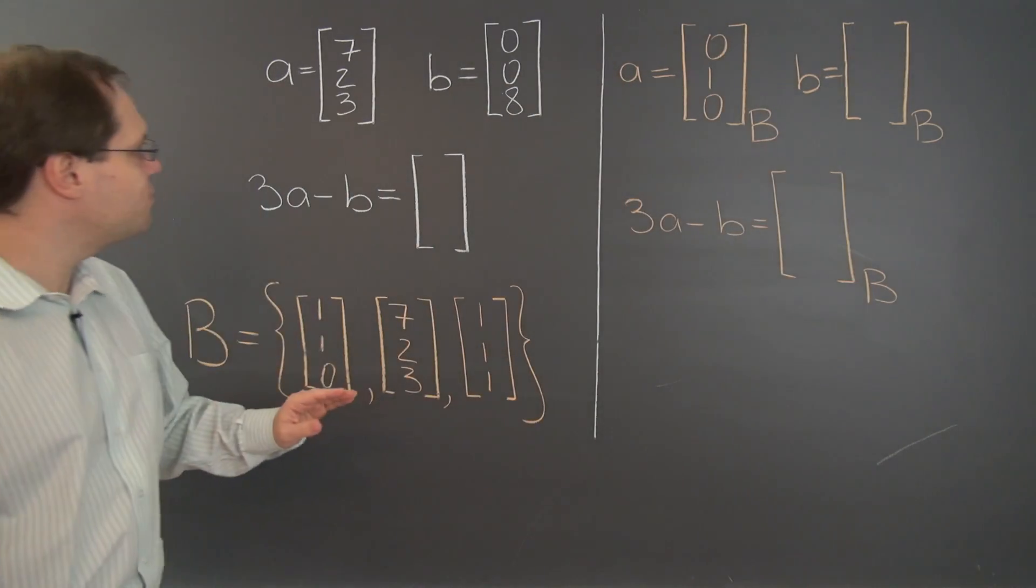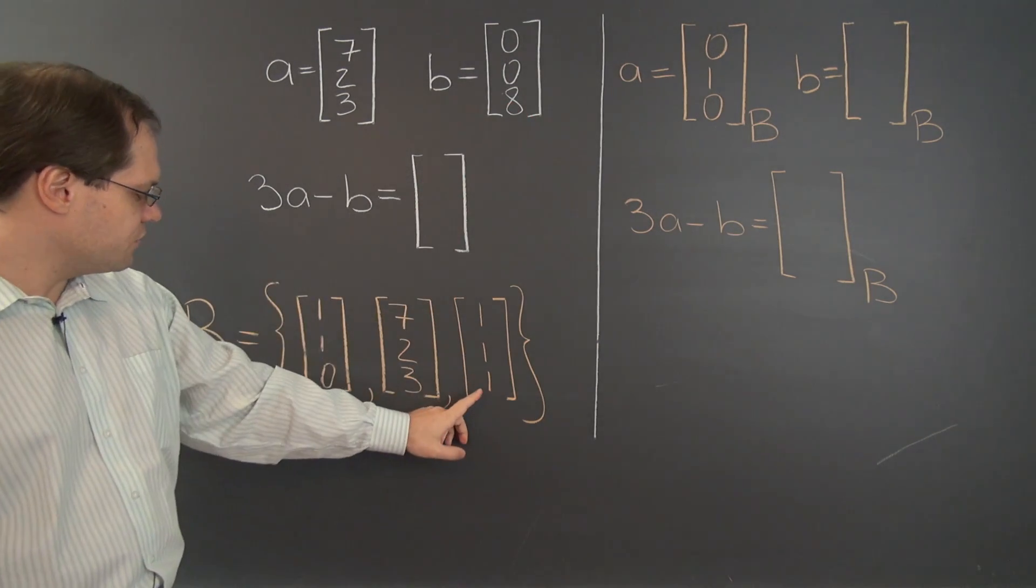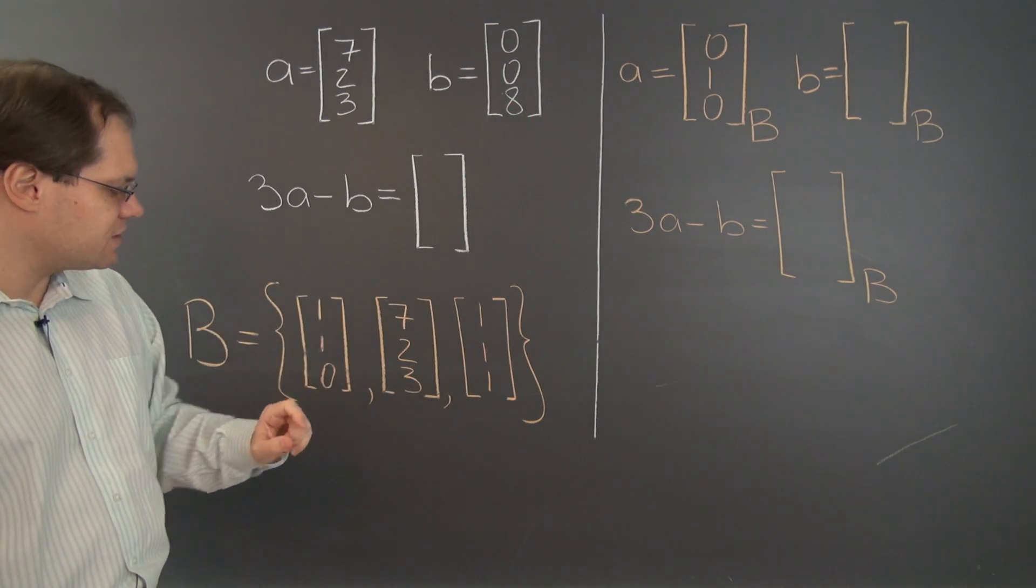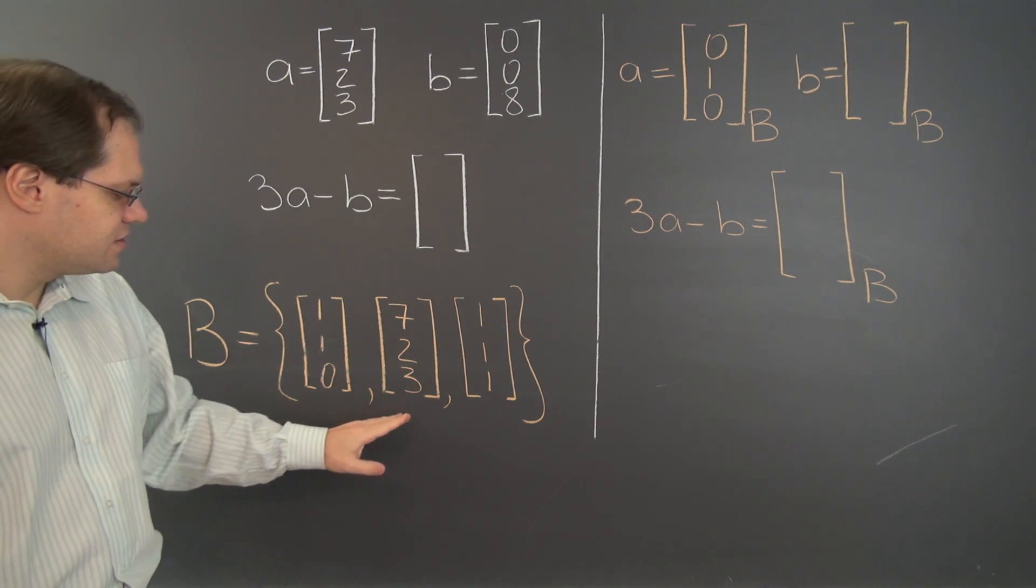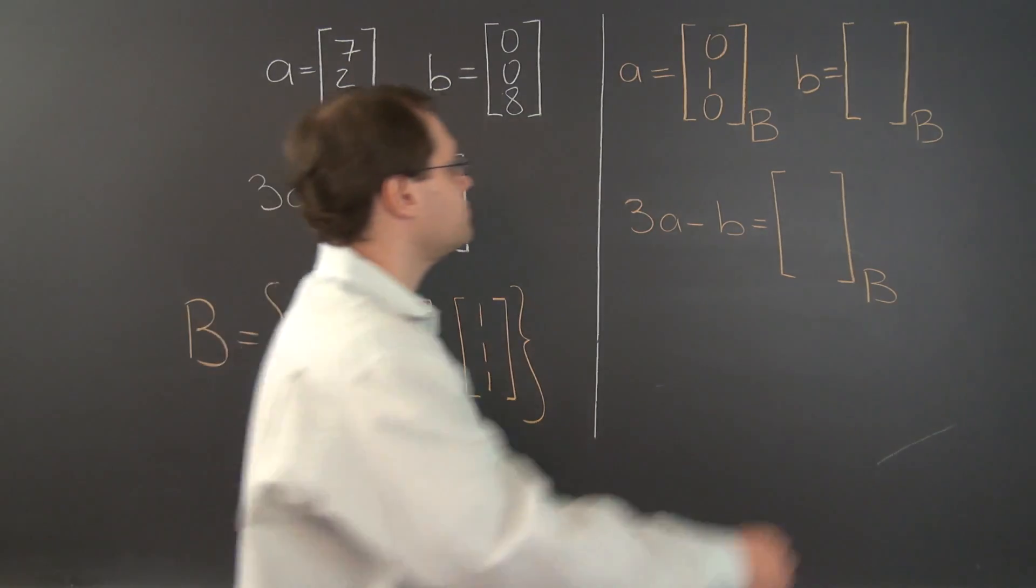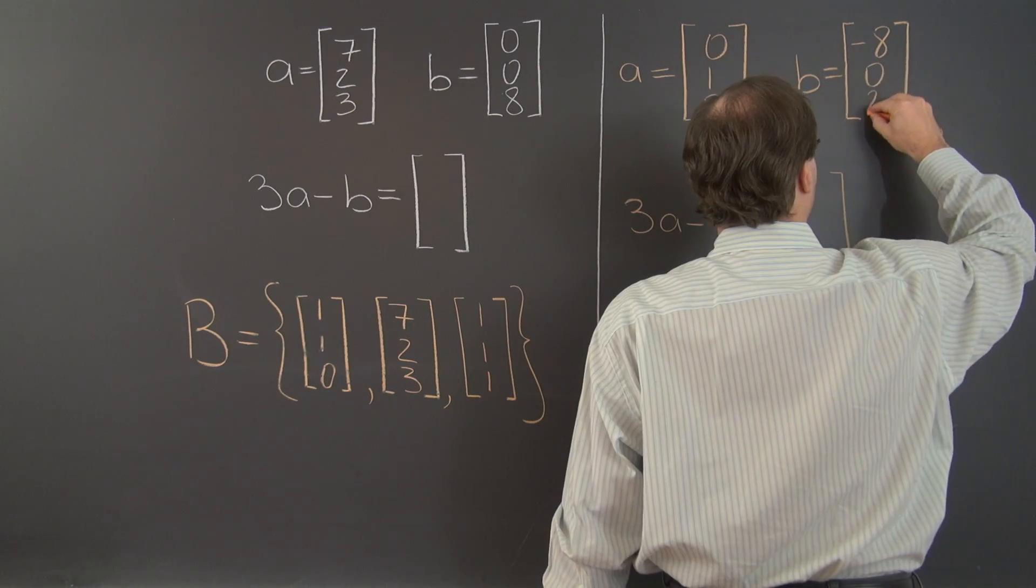And I made it almost just as easy for the vector B: 0, 0, 8. We of course need to take 8 of this vector and therefore negative 8 of this one. So it's negative 8, 0, 8.